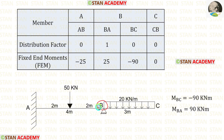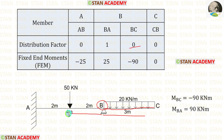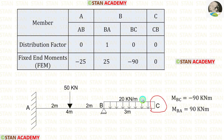At point B, we can easily determine the distribution factors because on the right of B there is an overhang. On the overhanging side, the distribution factor for BC is 0, and on the other side, for BA, it is 1. At the overhanging end C, the distribution factor for CB is also 0.